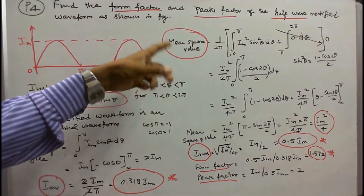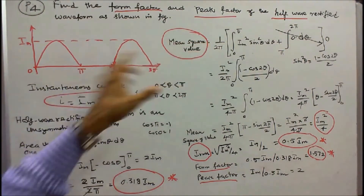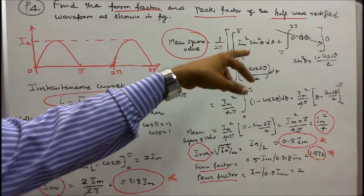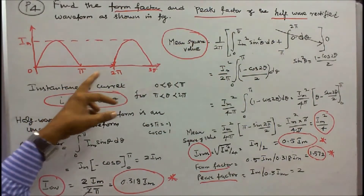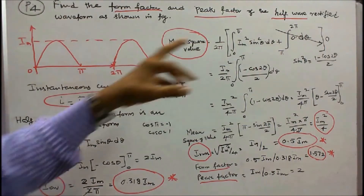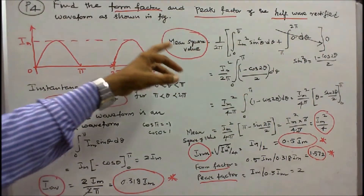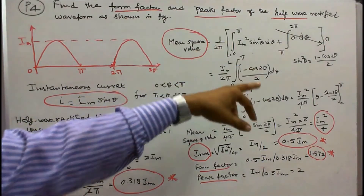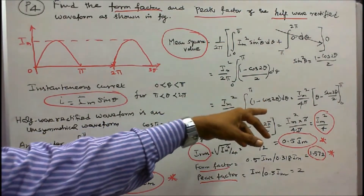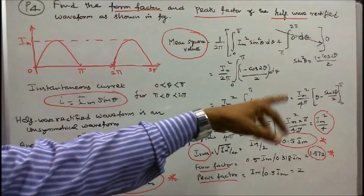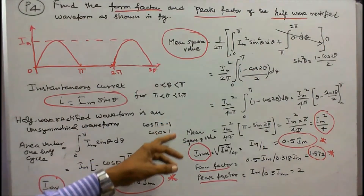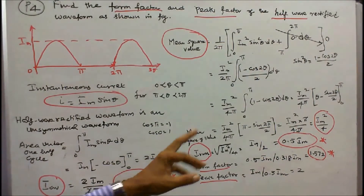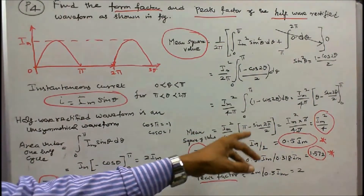The mean square value = (1/2pi) × [integral from 0 to pi of I_m² × sin²θ dθ + integral from pi to 2pi of 0 dθ]. The second term is zero. Using sin²θ = (1 − cos 2θ)/2, mean square value = (I_m²/4pi) × [θ − sin 2θ / 2] from 0 to pi = I_m²/4. Therefore, I_rms = sqrt(I_m²/4) = I_m/2 = 0.5 I_m.